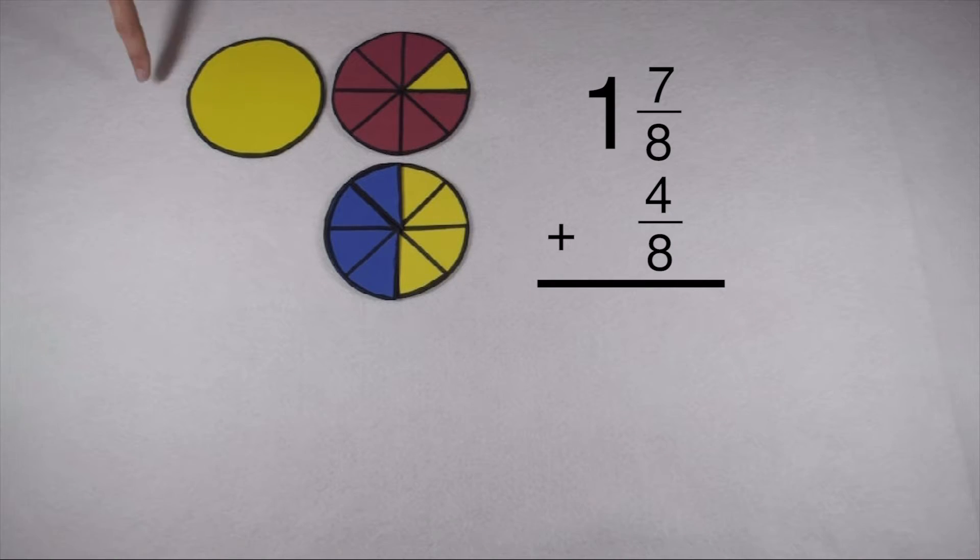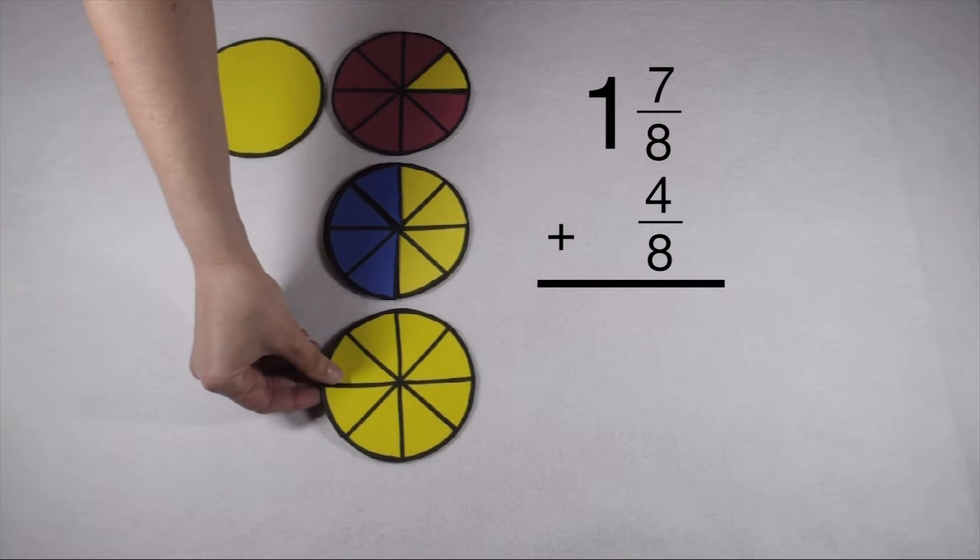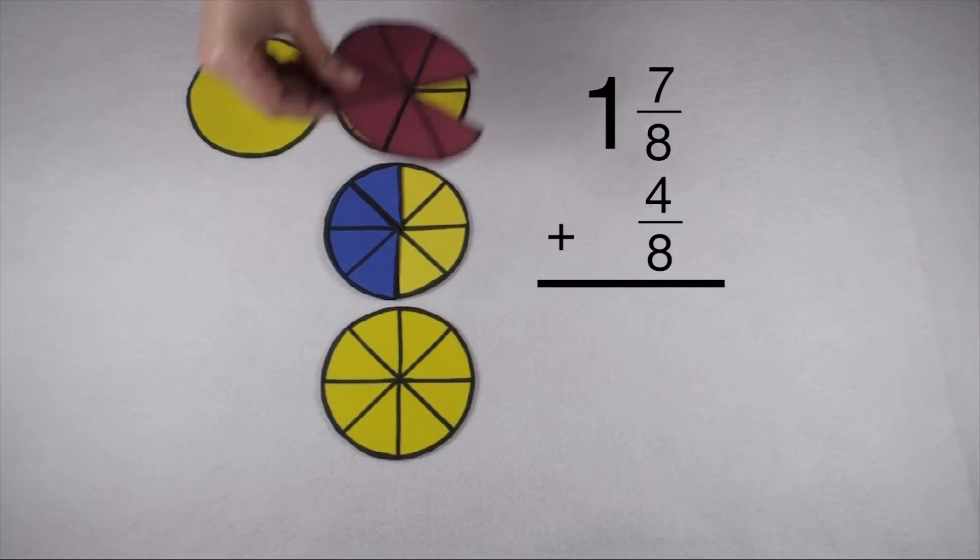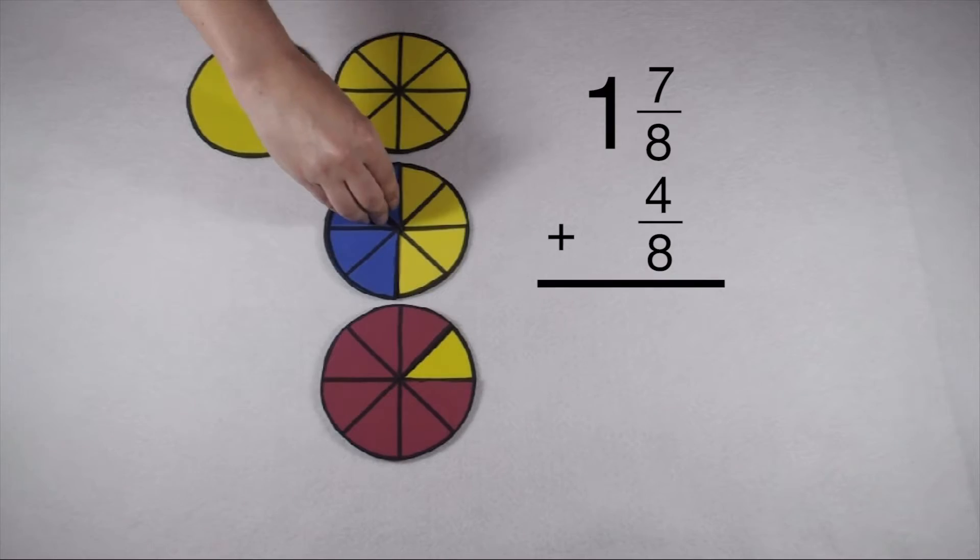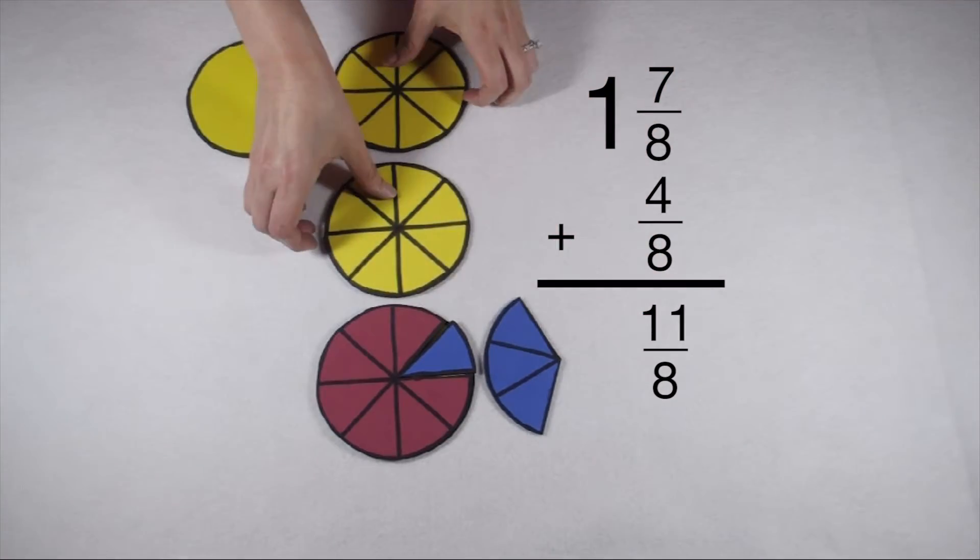We're starting with 1 and 7 eighths and we're adding 4 eighths. Since we have a common denominator, we can go ahead and add our numerators together. 7 eighths plus 4 eighths is going to give us a total of 11 eighths.